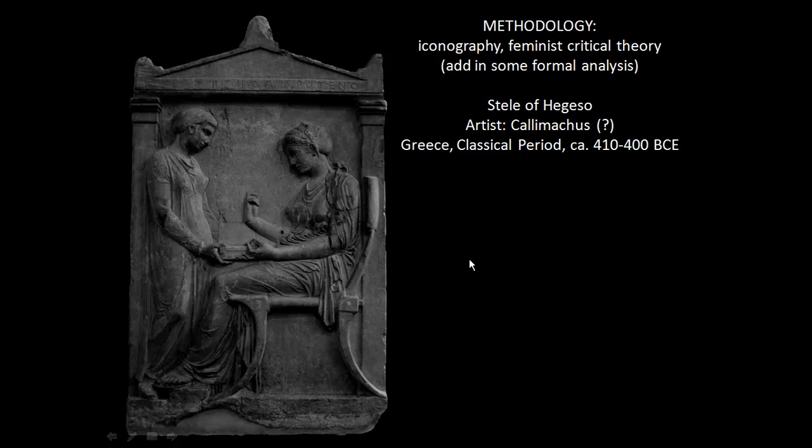The presence of the servant girl is also a representation of wealth, as are the beautiful hairstyle and lovely garment. Many symbols here represent wealth and comment on this woman's identity. Perhaps she's hoping this status will somehow transcend the earthly realm and she will retain it in the afterlife.